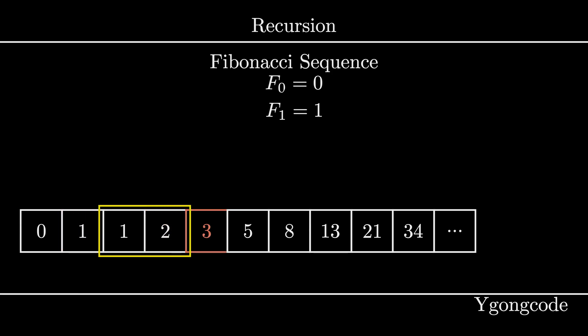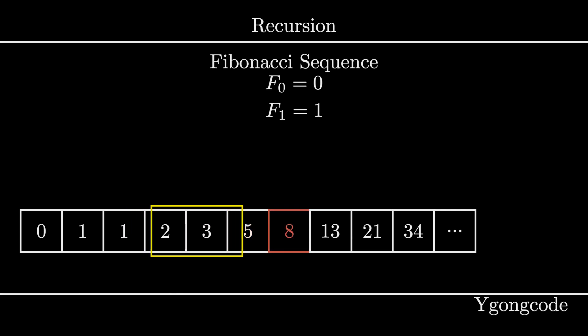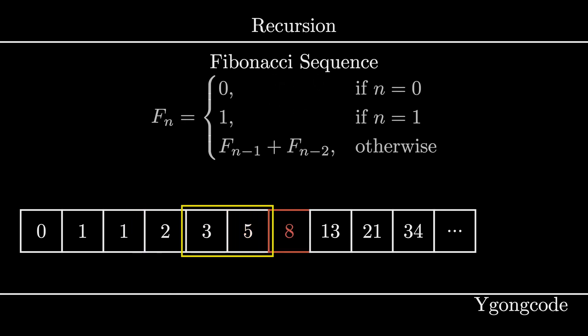For example, the third number is the sum of the first and second number, the fourth number is the sum of the second and third number, and so on. You can also model this mathematically using recurrence relations, which is useful for proofs and for developing intuition.